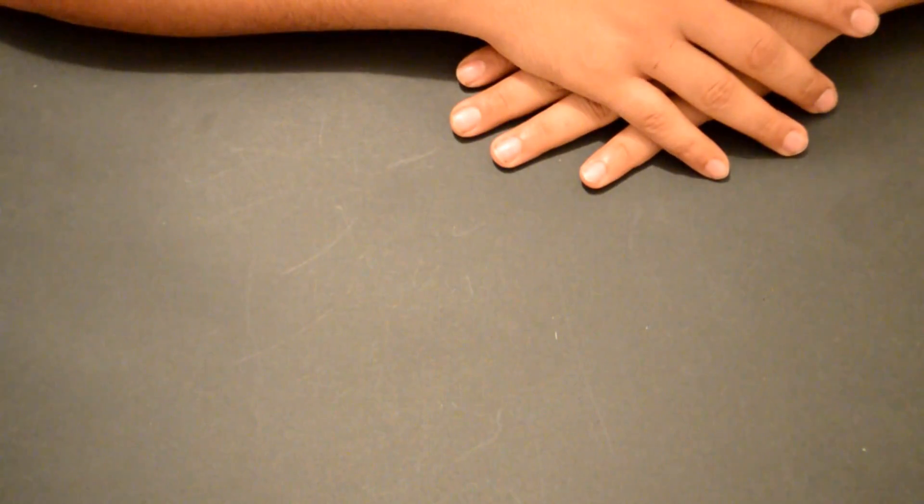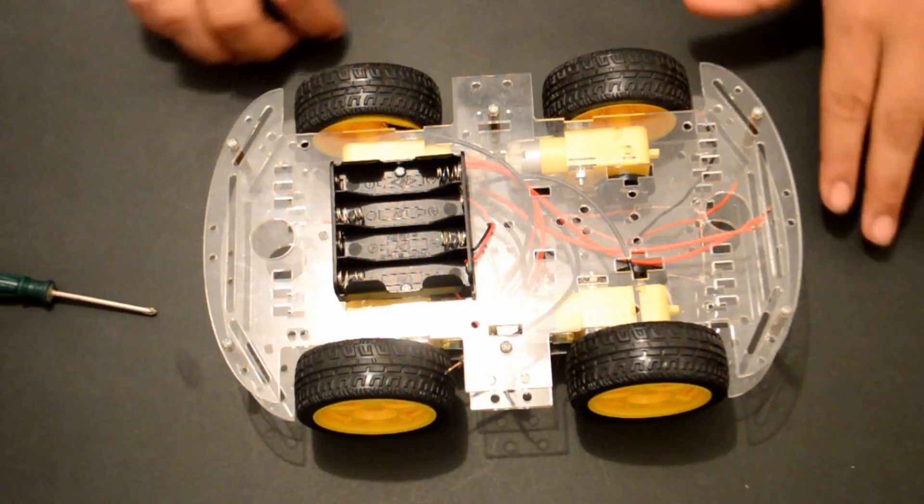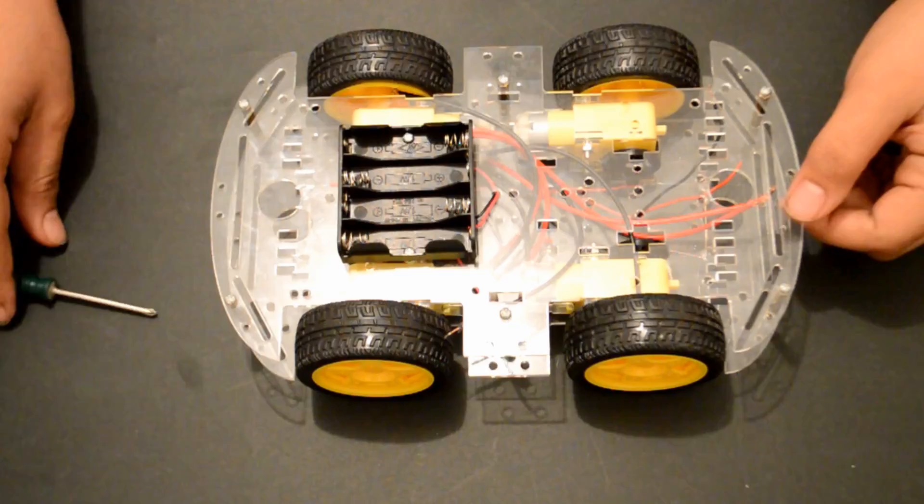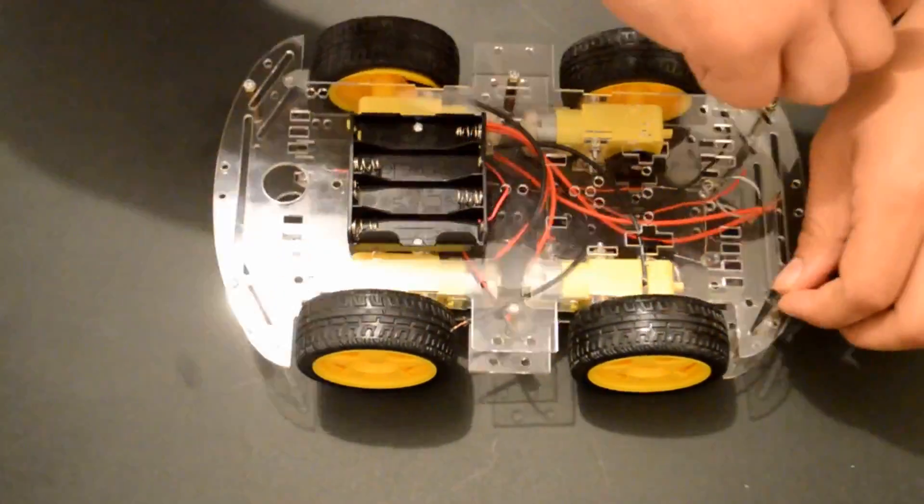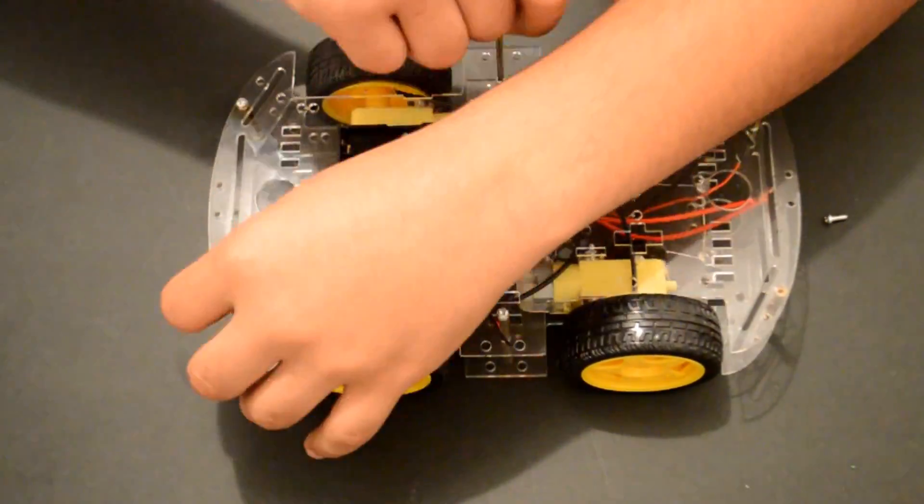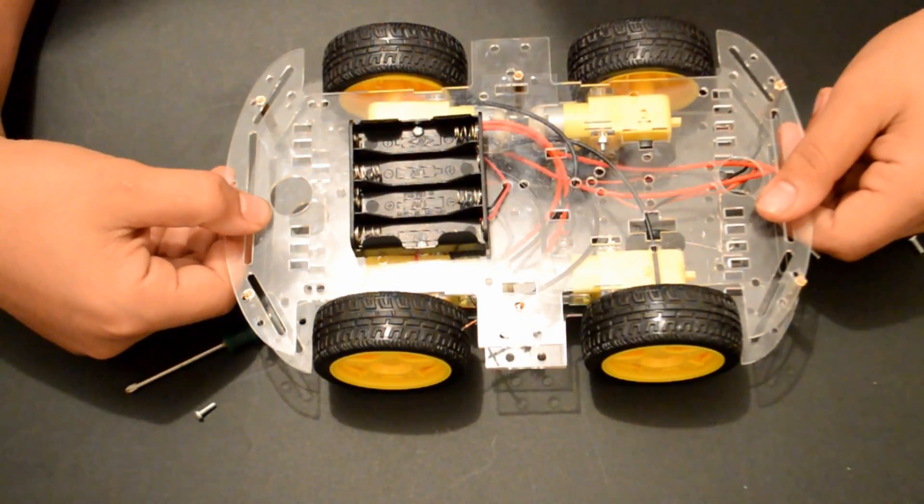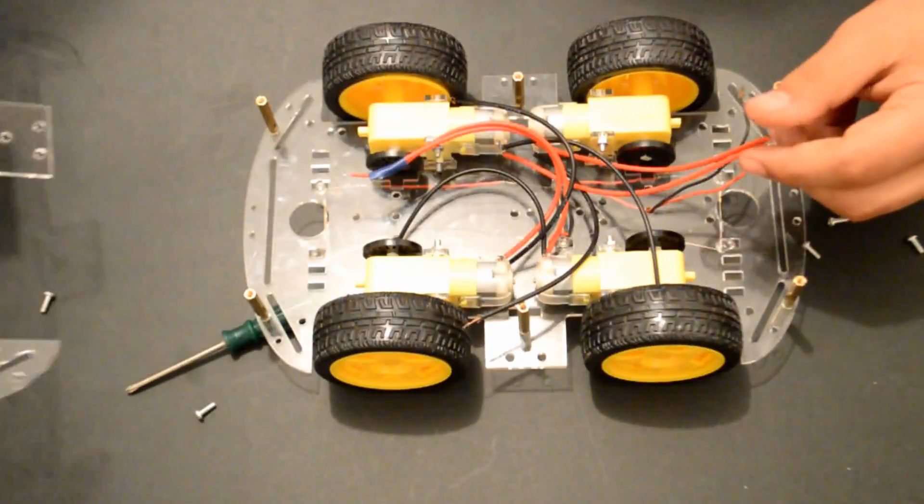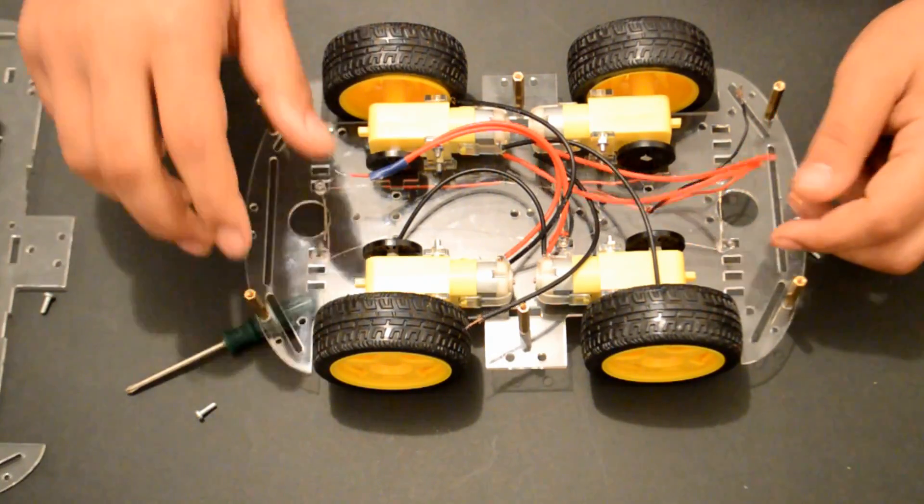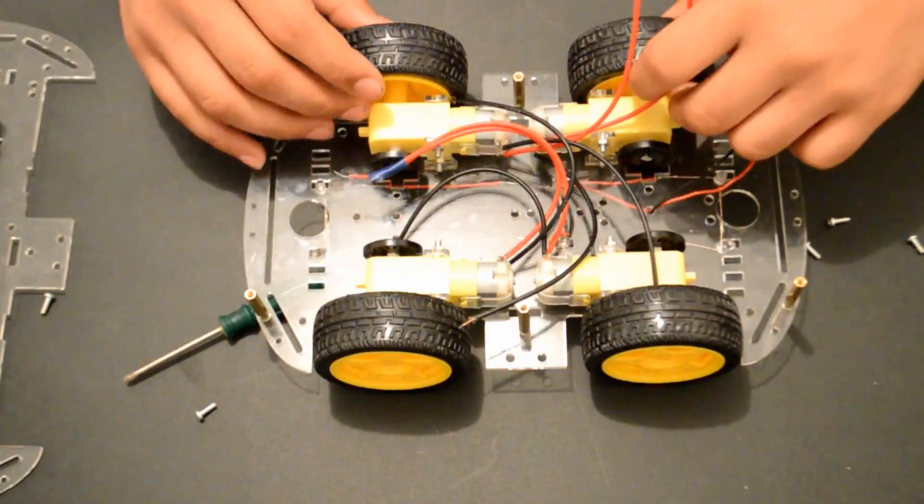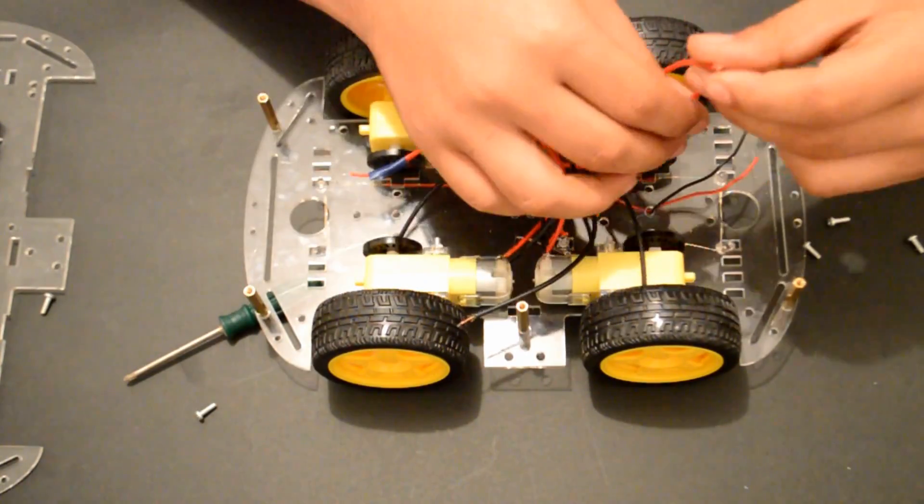So this is it for the parts and tools, let's get started with the build. The first thing we need to do is to take the cover off of this car. I finished unscrewing the top and it should come right off. So what I will do is I will connect both right motors to motor A and both left motors to motor B.